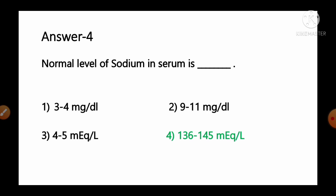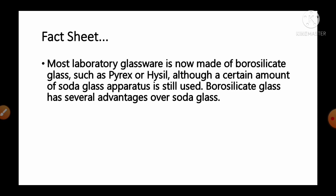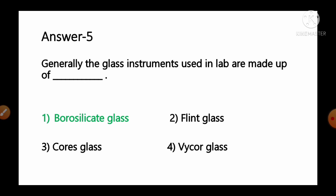Question number 5: Generally, the glass instruments used in laboratories are made up of — options: 1) borosilicate glass, 2) flint glass, 3) coarse glass, 4) y-core glass. Most laboratory glassware is made of borosilicate glass such as Pyrex or Kimax, although some soda glass apparatus is still in use. Borosilicate glass has several advantages over soda glass. So option number 1, borosilicate glass, is the correct answer.